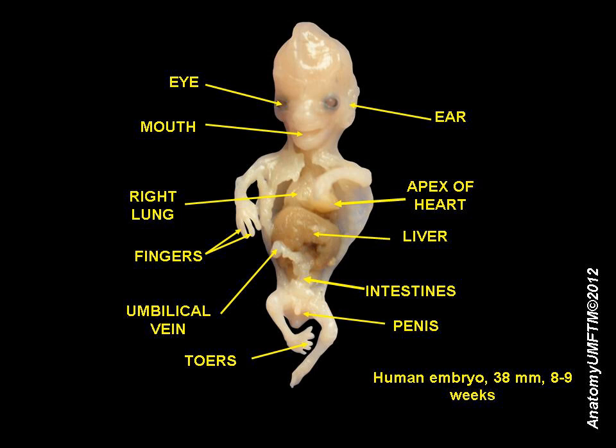Ontogeny is the origination and development of an organism, usually from the time of fertilization of the egg to the organism's mature form, although the term can be used to refer to the study of the entirety of an organism's lifespan. Ontogeny is the developmental history of an organism within its own lifetime, as distinct from phylogeny, which refers to the evolutionary history of a species.